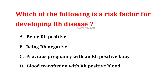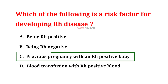Which of the following is a risk factor for developing Rh disease? A. Being Rh positive. B. Being Rh negative. C. Previous pregnancy with an Rh positive baby. D. Blood transfusion with Rh positive blood. And the correct answer is C: previous pregnancy with an Rh positive baby.